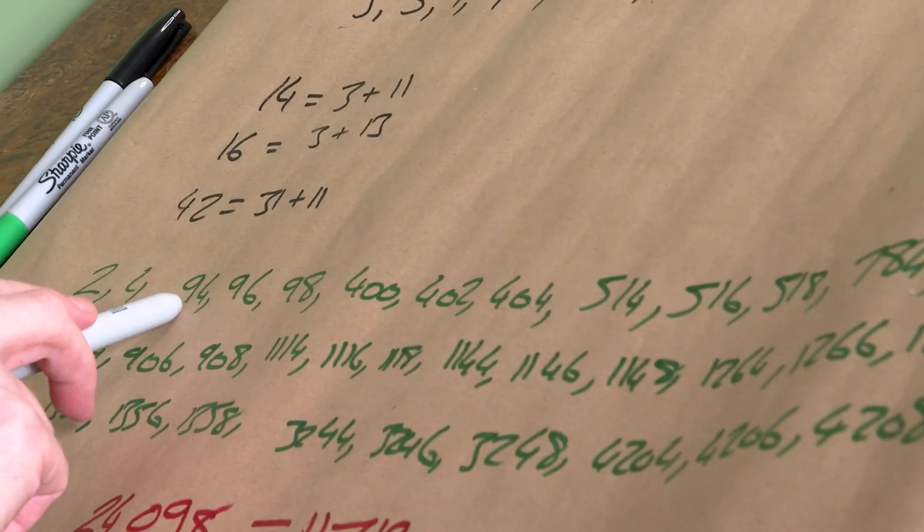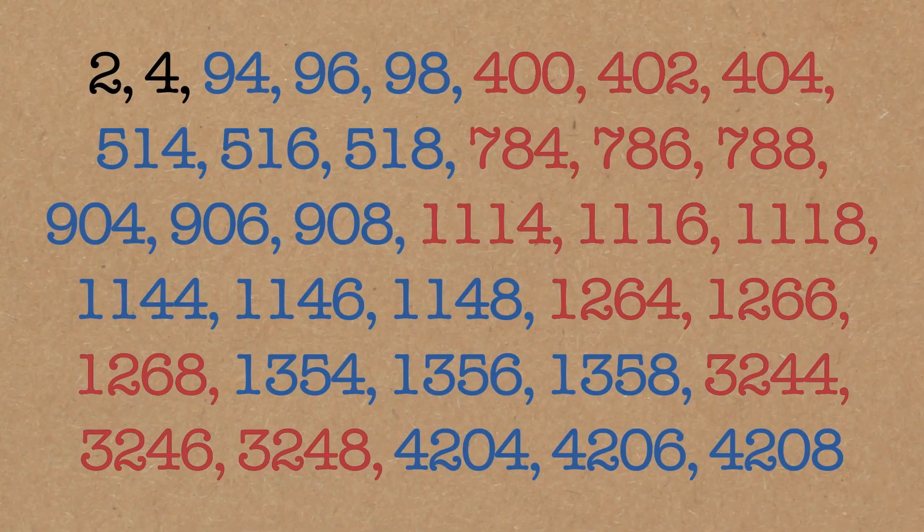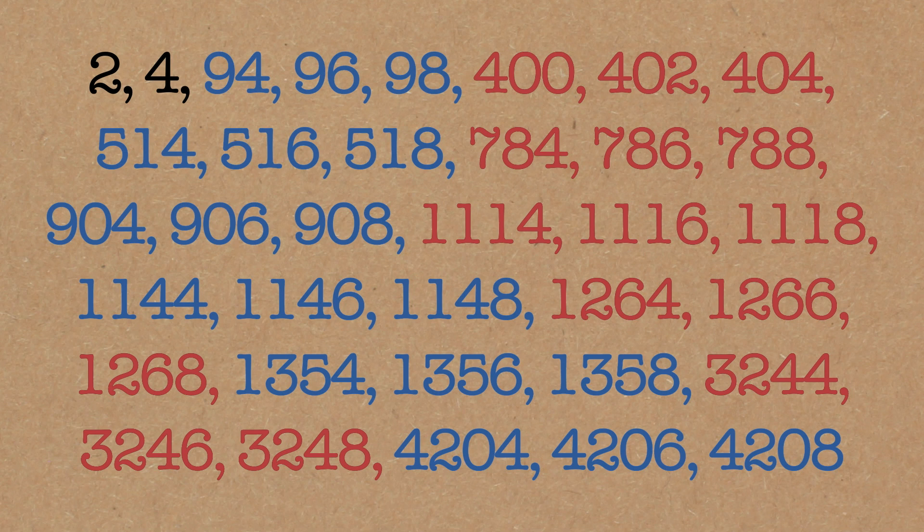But look at the other exceptions. 94, 96, 98. 400, 402, 404. 514, 516, 518. They're coming in these triples. That's interesting, isn't it?